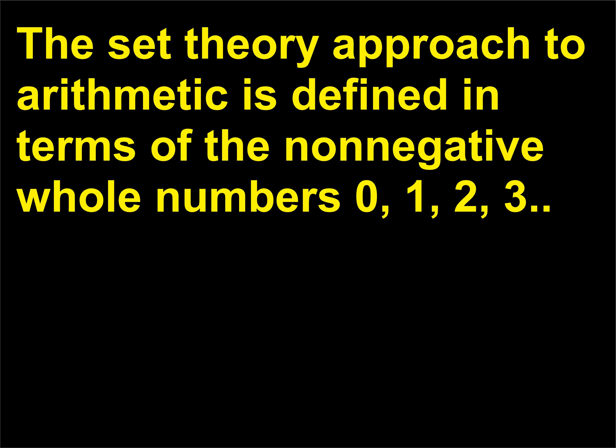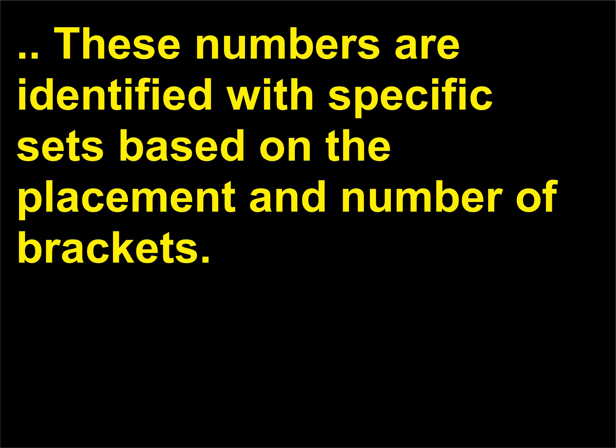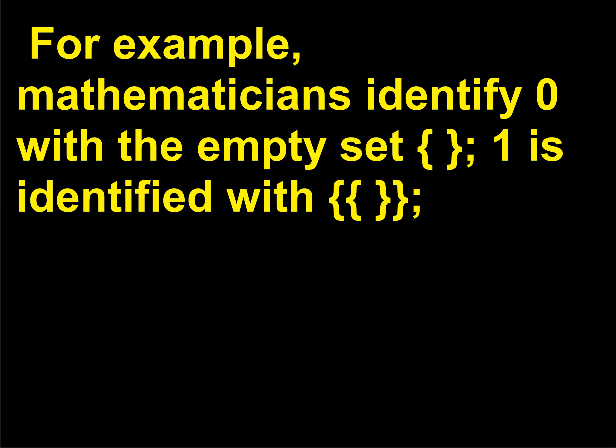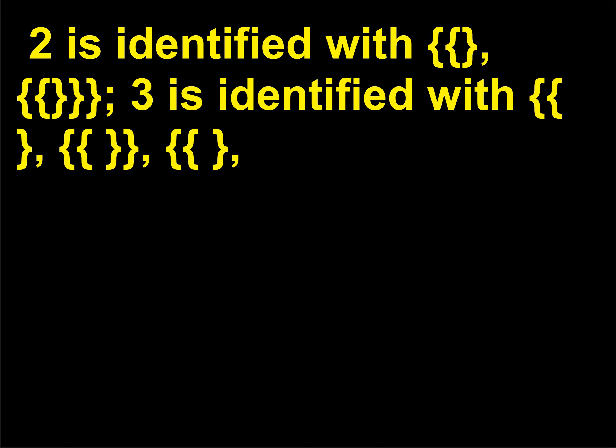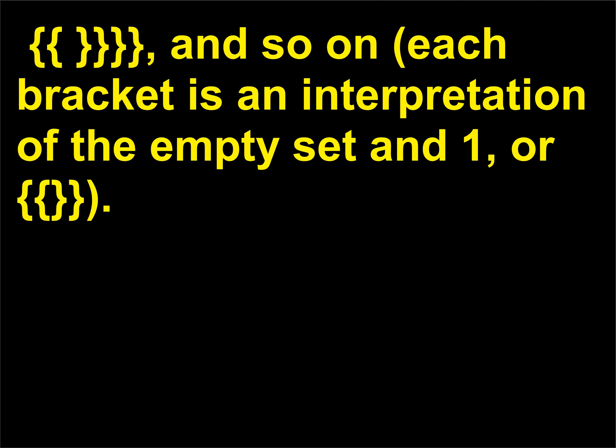The set theory approach to arithmetic is defined in terms of the non-negative whole numbers 0, 1, 2, 3. These numbers are identified with specific sets based on the placement and number of brackets. For example, mathematicians identify 0 with the empty set; 1, 2, 3, and so on are each identified accordingly. Each bracket is an interpretation of the empty set, and so on.